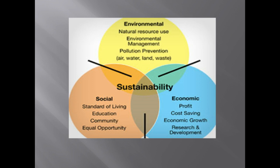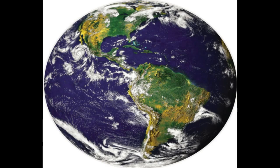Landscape ecologists deal with the arrays of ecosystems and how they are arranged in a geographic area. A landscape is defined as a mosaic of connected ecosystems. It's worth mentioning that the biosphere is the global ecosystem — in other words, the sum of all the planet's ecosystems.